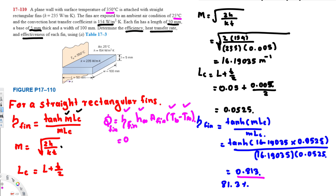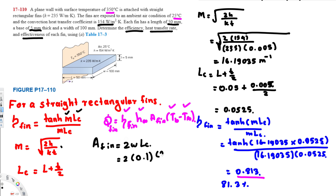The fin area is calculated as A_fin equals 2 times w times LC. Width w is 100 millimeters, which equals 0.1 meters, and corrected length LC is 0.0525 meters. So A_fin equals 2 times 0.1 times 0.0525, which gives 0.0105 square meters.